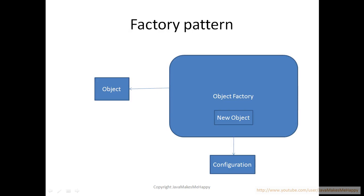Now what is a factory pattern? As you can see in this slide, here we have an object. Instead of creating that object myself, I would ask an object factory to create an object for me. Now the factory pattern reads from a configuration file — there should be a configuration XML file or metadata — and the object factory reads from it to determine what type of object is required. The object tells the object factory to create a new object for it. The object factory reads the configuration XML file, creates the new object, and that new object is handed over to the requesting object.